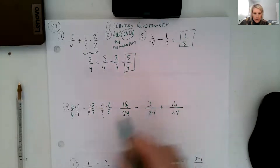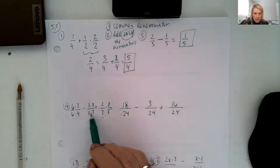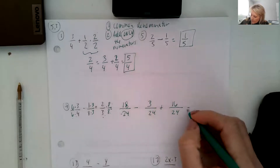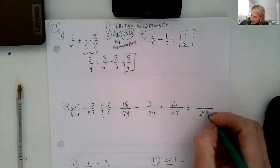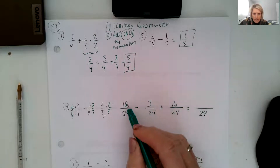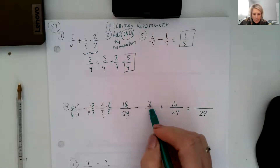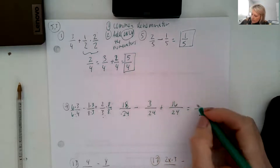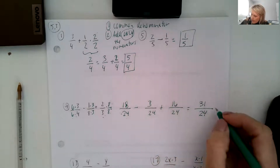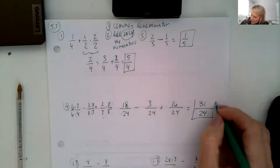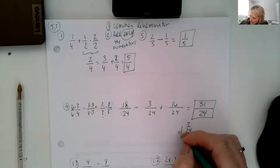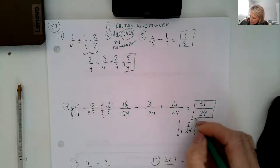Now because I have a common denominator, my denominator will stay twenty-four, and I can add and subtract my numerators. So eighteen minus three is fifteen, plus sixteen is thirty-one. We can leave it at that, or turn this into one and seven over twenty-fourths if we wanted.